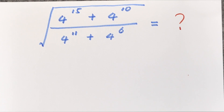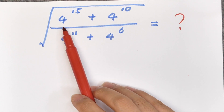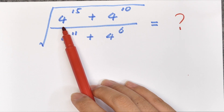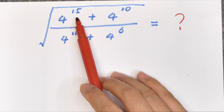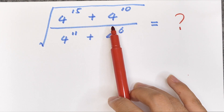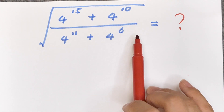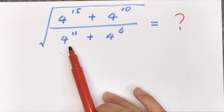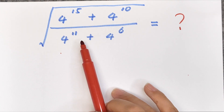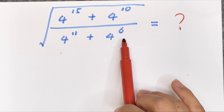Hello everyone, welcome to Math4U. How to solve: square root of (4 to the power of 15 plus 4 to the power of 10) divided by (4 to the power of 11 plus 4 to the power of 6).